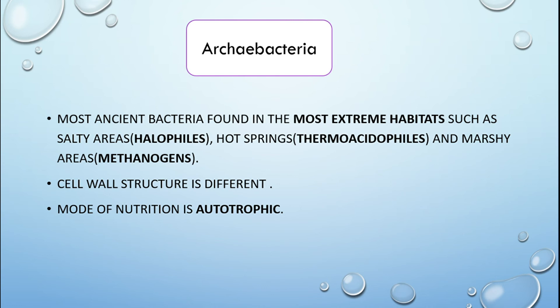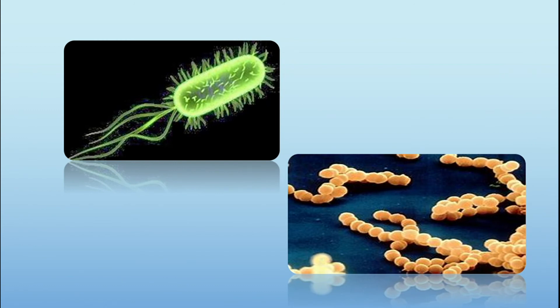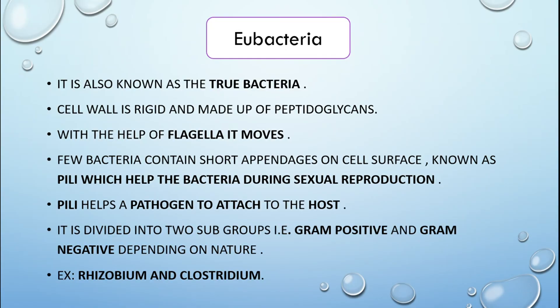Eubacteria are also known as true bacteria. They have a rigid cell wall made up of peptidoglycans. With the help of flagella, eubacteria move. Some bacteria contain short appendages called pili, which help during sexual reproduction and help pathogens attach to the host. Eubacteria are divided into two subgroups — gram positive and gram negative — depending upon their nature. Examples are Rhizobium and Clostridium.